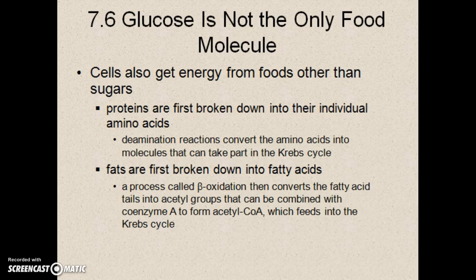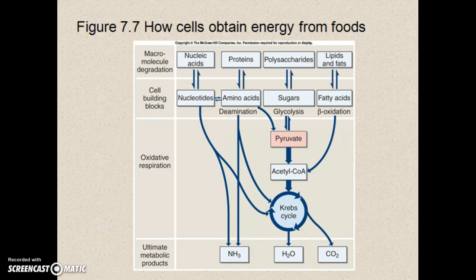Glucose is not the only food molecule we can get energy from, since glucose and sugars aren't the only things we eat. Proteins and fats can also be broken down by our bodies to get nutrients. Those molecules in the foods we eat need to be first broken down into smaller parts until they can be absorbed through our small intestine. For example, chains of carbohydrates — polysaccharides — made up of glucose units or sugar monomers can go through the Krebs cycle and other macromolecules can go through a similar process to extract nutrients.